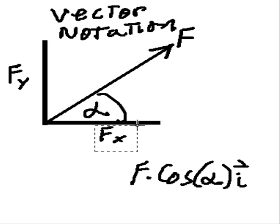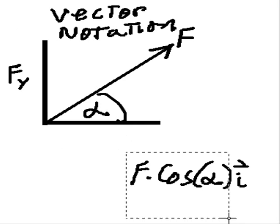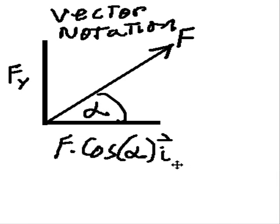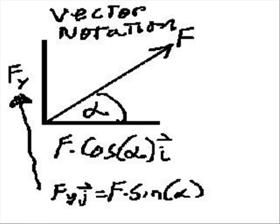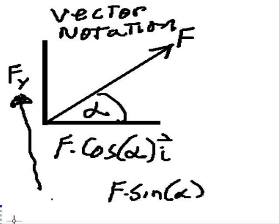Rather than say Fx, you could say F cosine alpha in the ith direction. And, Fy could be represented as what? Well, we know that Fy in the j direction would be equal to F times the sine of alpha. But, you can represent, you can get rid of this part altogether now.